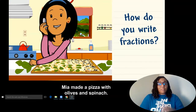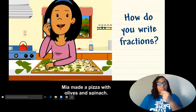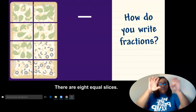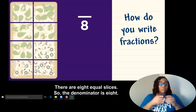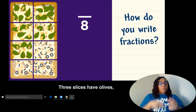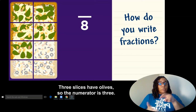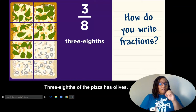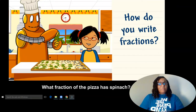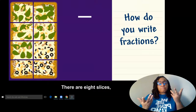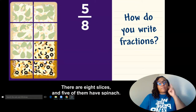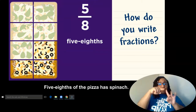Mia made a pizza with olives and spinach. What fraction of her pizza has olives? There are eight equal slices. So the denominator is eight. Three-eighths of the pizza has olives. What fraction of the pizza has spinach? There are eight slices, and five of them have spinach. Five-eighths of the pizza has spinach.